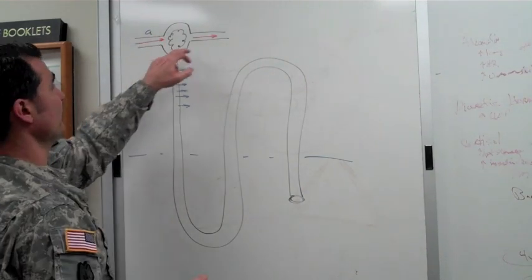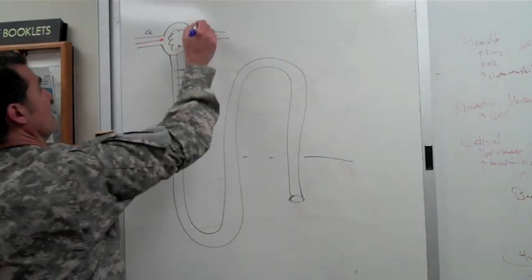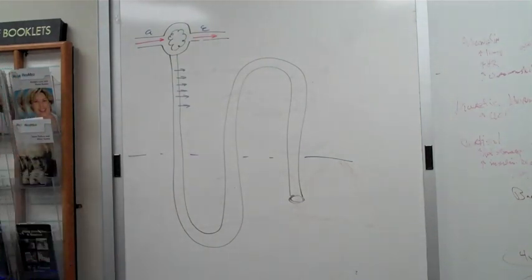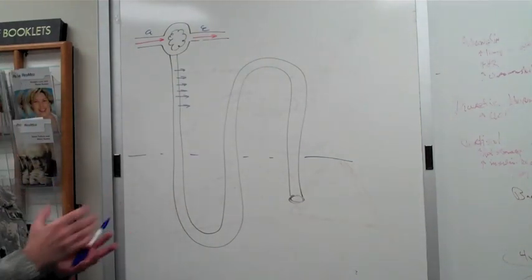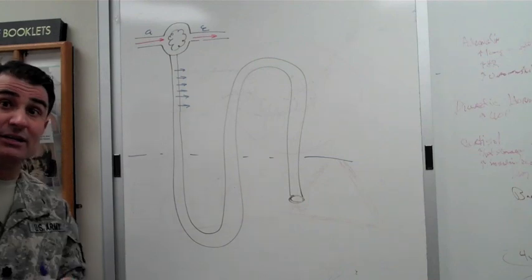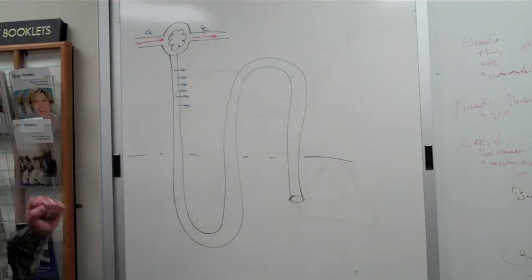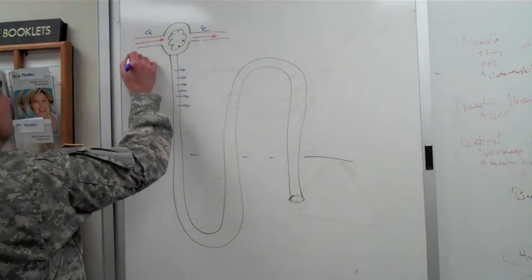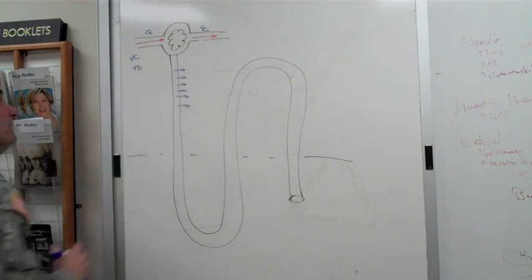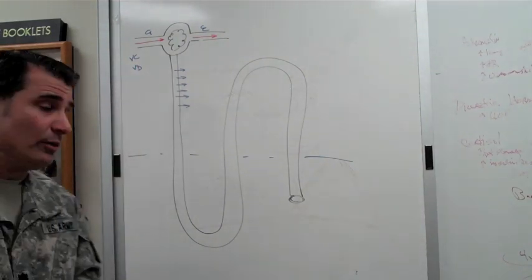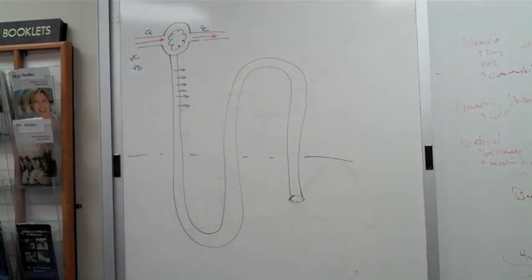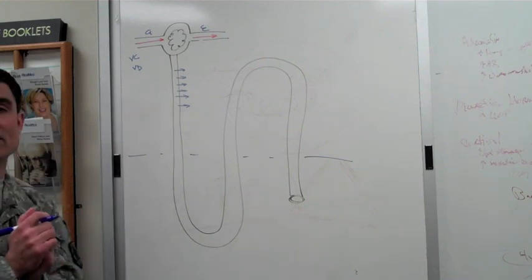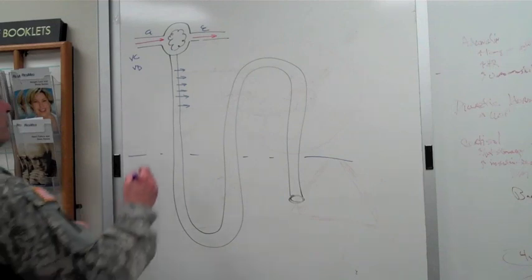There are a few things that cause actions at the afferent arteriole. The first thing that happens is that either you vasoconstrict or you vasodilate. Basically, there are some molecules that cause vasoconstriction and some phenomena that cause vasodilation.